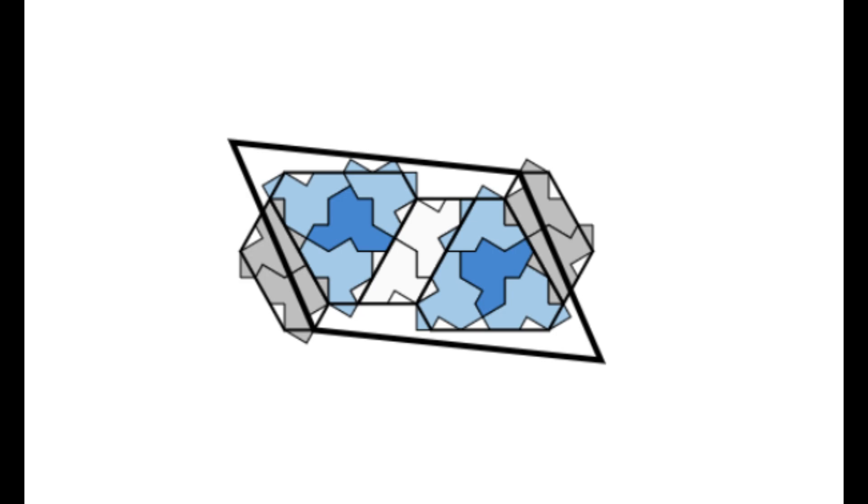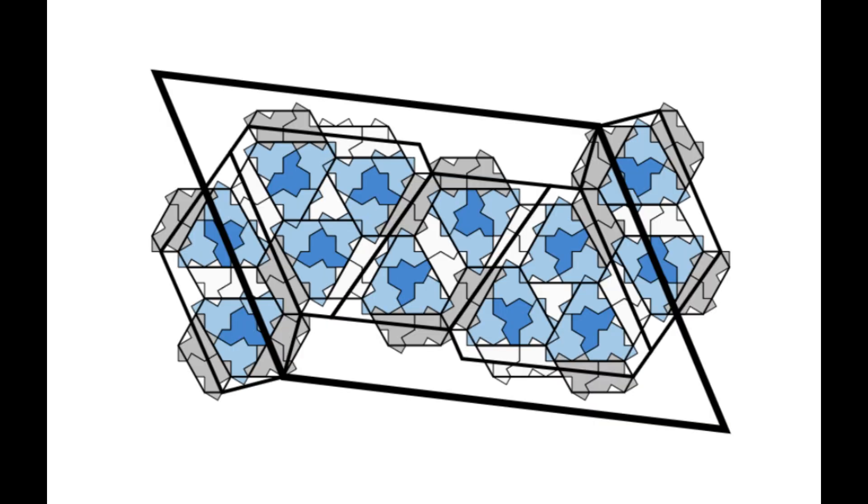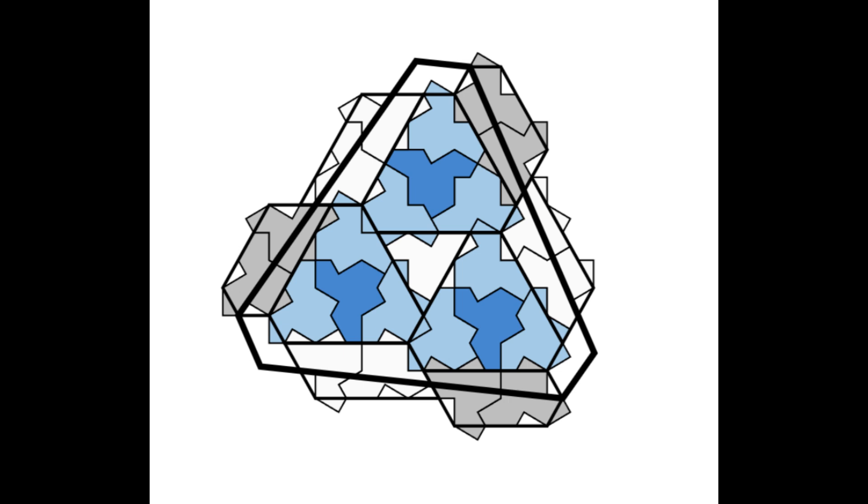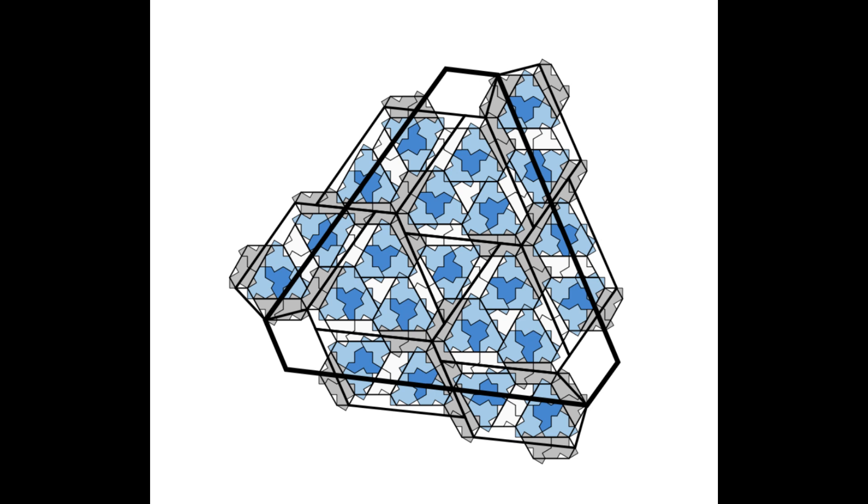And with every generation, each meta tile becomes more and more detailed. And the basic shape of every generation is the same, but each of the meta tiles is becoming more detailed, thus the entire pattern becomes more detailed or larger.